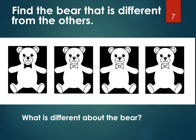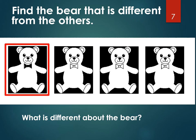Here's another set of bears, and one of them is different. Can you point to the one that is different? Did you point to this one? If you did, you are correct. What's different about the bear? His bow tie is black. Everybody else has a white bow tie. Job well done. Let's go to the next question.